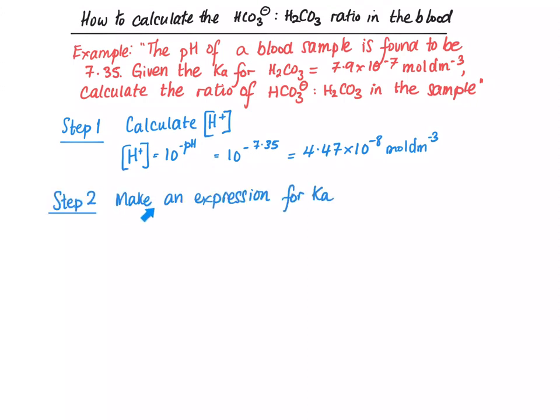Step 2, you need to work out what the expression for Ka is. H2CO3 is in equilibrium with H+ and HCO3-. So Ka is equal to the concentration of the products, H+ times HCO3-, divided by the concentration of the starting material, H2CO3. So Ka is H+ times HCO3- divided by H2CO3 concentration.